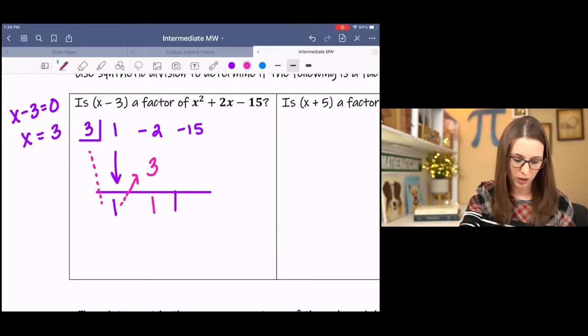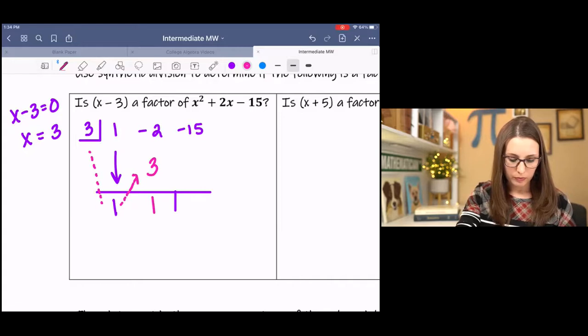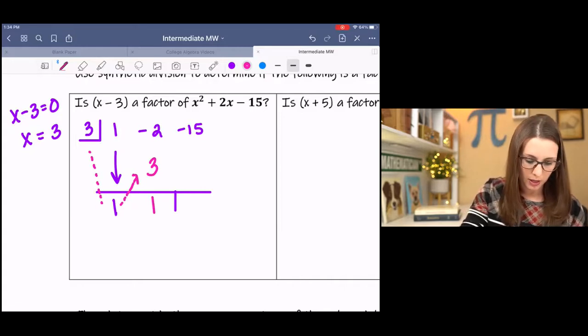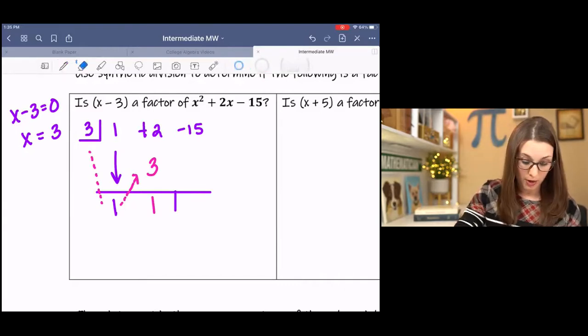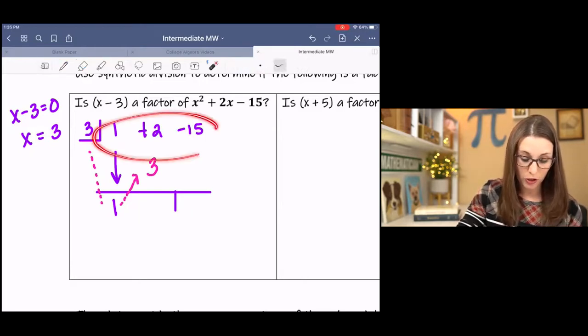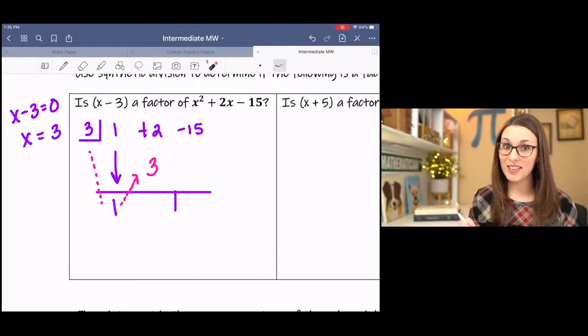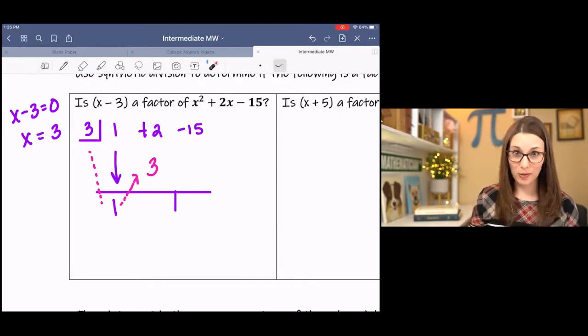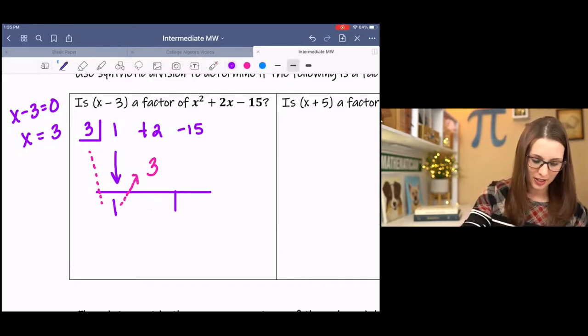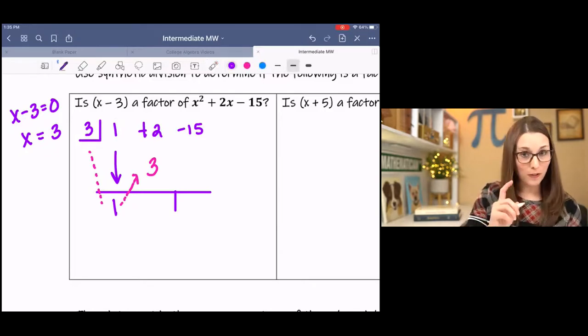Oops, 3. I'm sorry. Yeah, that's right. And then you know what, I made a mistake. This is a plus. So that would have been a mess. Make sure when you're setting up your coefficients that you use the correct signs on those numbers or you're going to have a problem like I just did. And 2 plus 3 is 5.